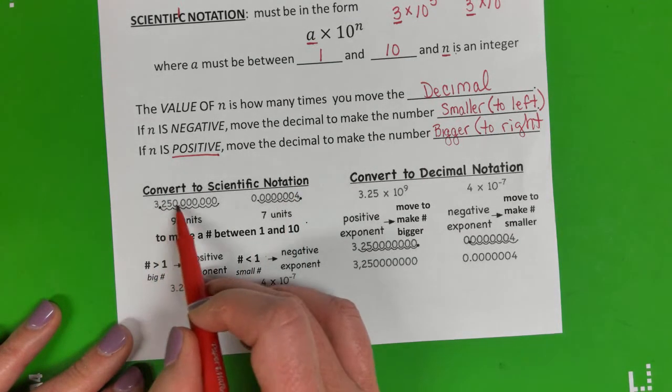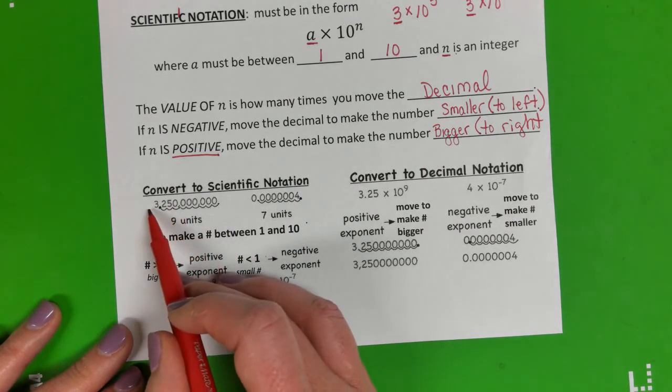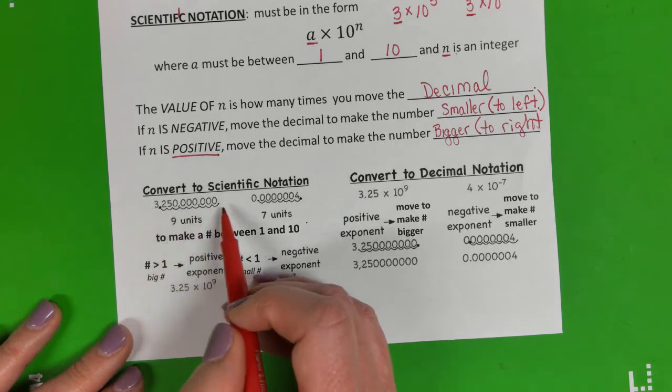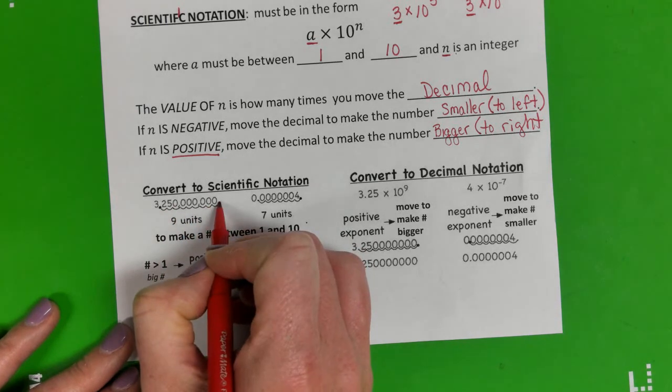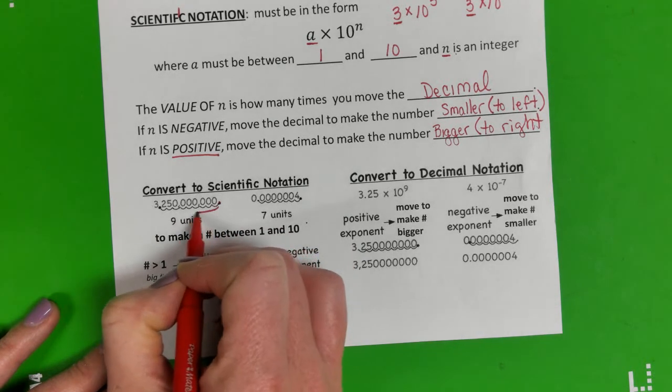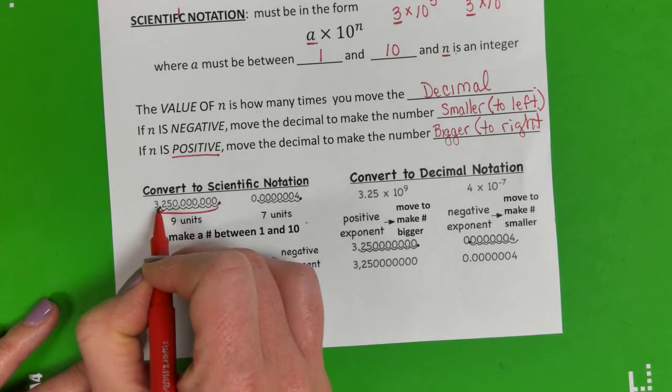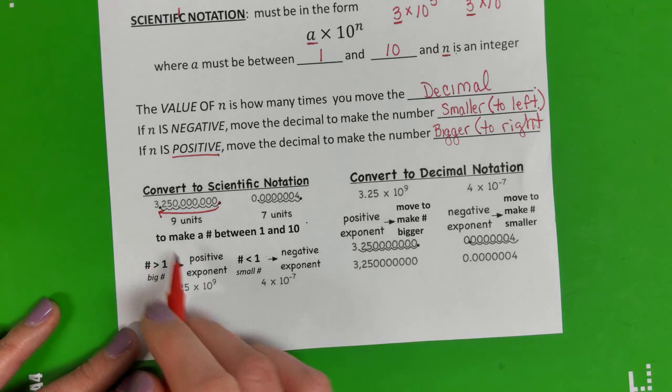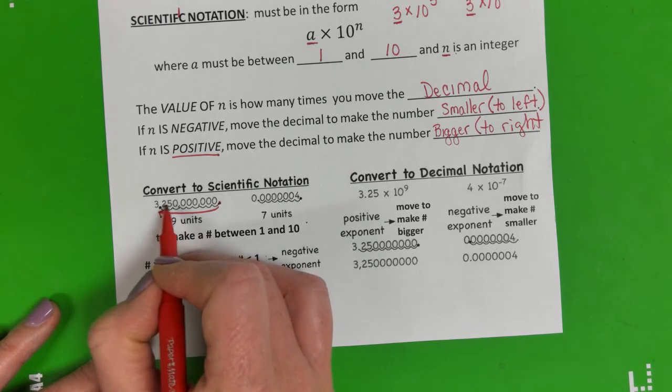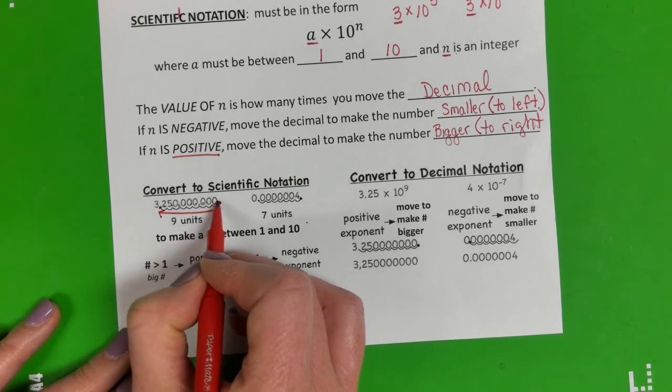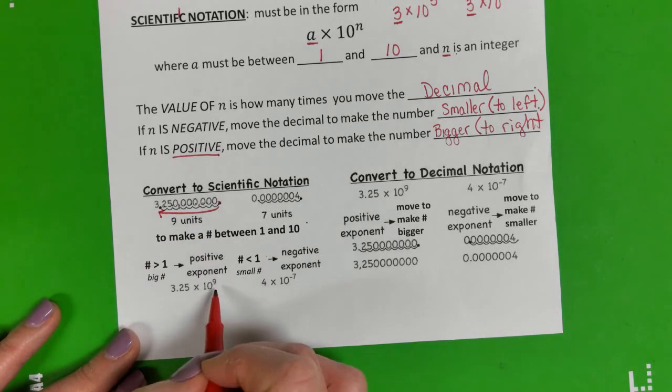So here we have, what is this, 3,250,000,000. Here is my decimal to begin with. I'm going to move the decimal all the way to behind the 3, and so this would be 3.25 times 10 to the 9th. There are 9 numbers behind that decimal where we moved it.